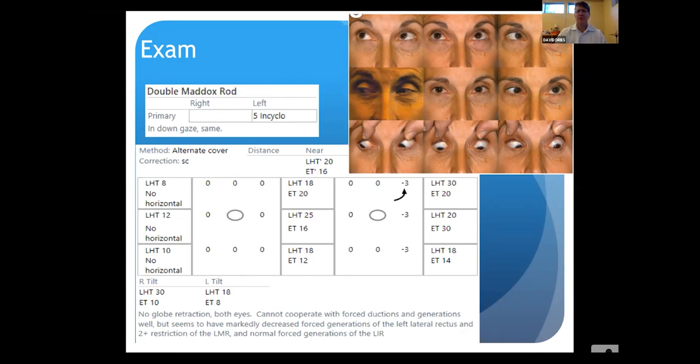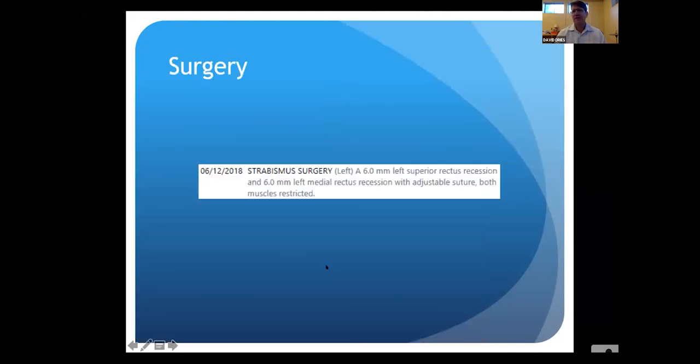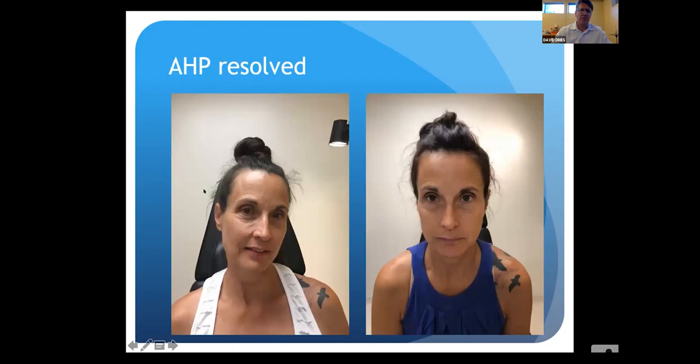I took her to the operating room because I wanted to help her with the double vision and abnormal head position. I found that both the medial rectus and superior rectus were restricted with force duction testing. The surgery ended up being six millimeters recession on both muscles, which was enough to release restriction. Here's her abnormal head position preoperatively, and here's her head position postoperatively - pretty much resolved the turn and the tilt.